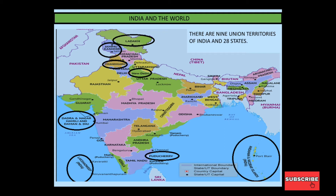Otherwise, they remain Union Territories. Union Territories are controlled by the central government. Jammu Kashmir and Ladakh have been converted to Union Territory. Because of a certain situation, Jammu Kashmir's state status was converted to Union Territory. When a region is a state, power rests with the state government. When it is a Union Territory, the central government controls it.